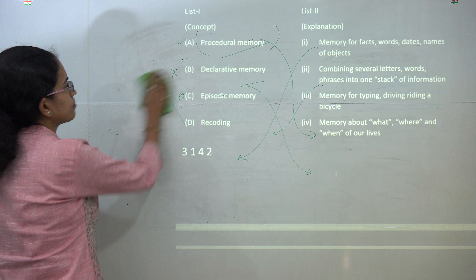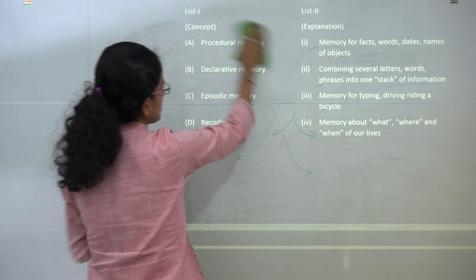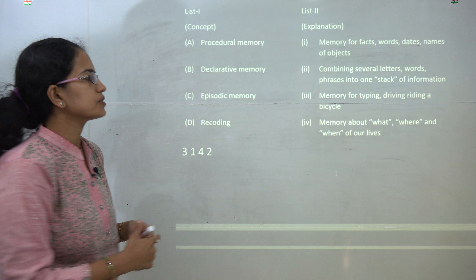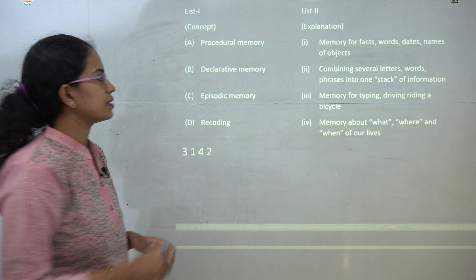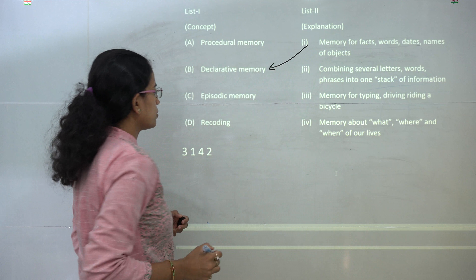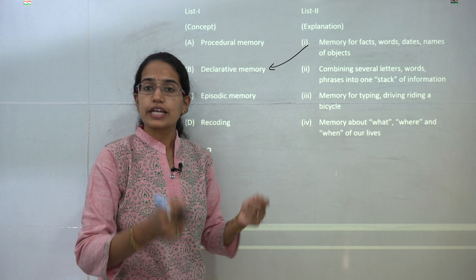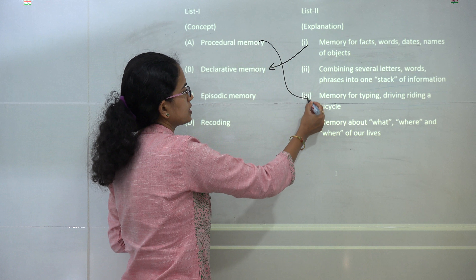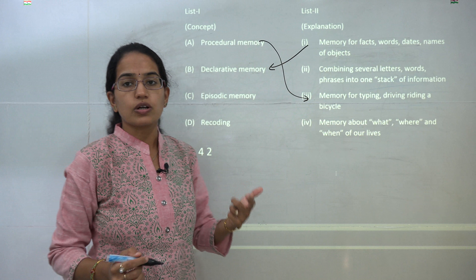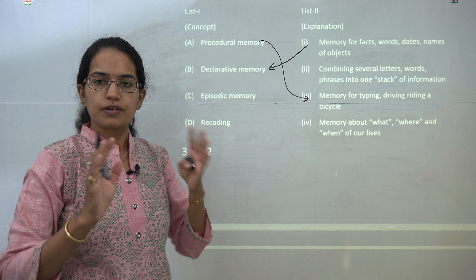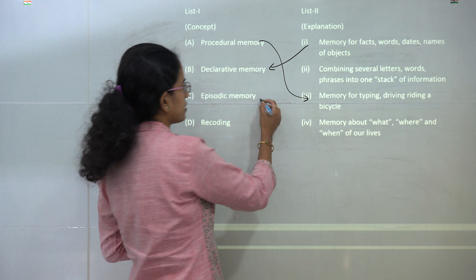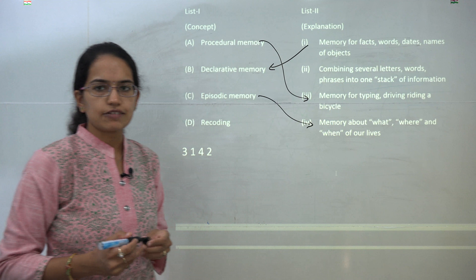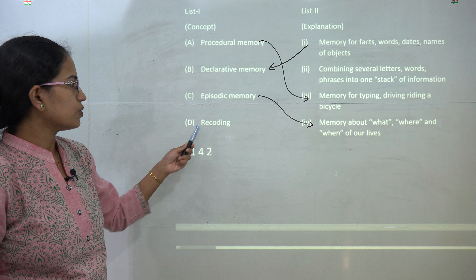The next question asks you to match types of memory with their explanations. Declarative memory deals with facts, dates, and names — it is a very obvious, declarative kind of memory. Procedural memory involves working with procedures: how to drive, how to type, how to write. Episodic memory concerns when, how, and where an event happened. Recoding involves combining various letters and phrases into sentences.